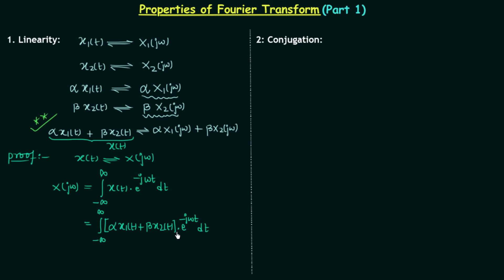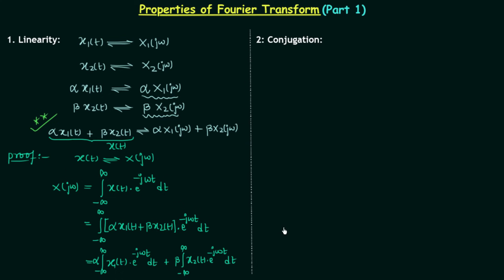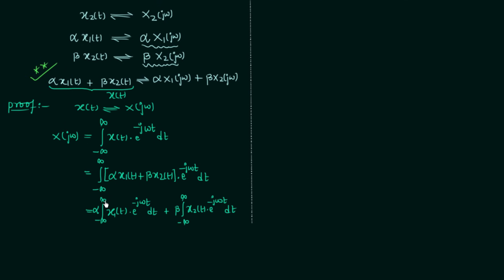Now I will open this bracket and separate the integrations. We have the integration from minus infinity to infinity; alpha is a constant so I will take it out of the integration. So we have alpha times the integration of x1(t) multiplied by e to the power minus jωt dt. Similarly, we have beta times the integration from minus infinity to infinity of x2(t) multiplied by e to the power minus jωt dt. Now the proof is in front of us.